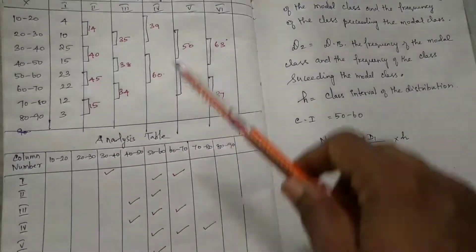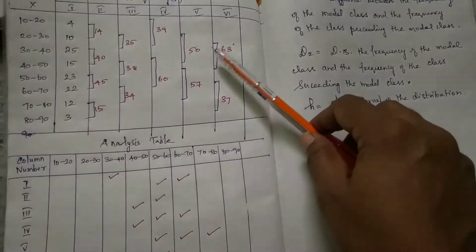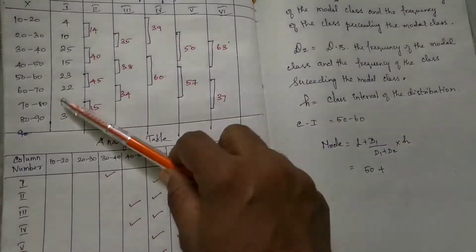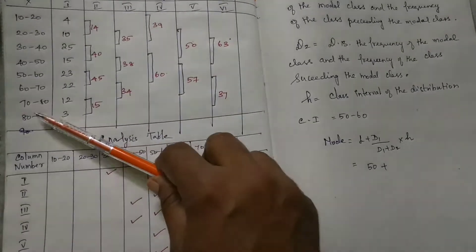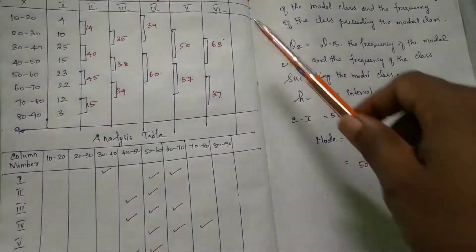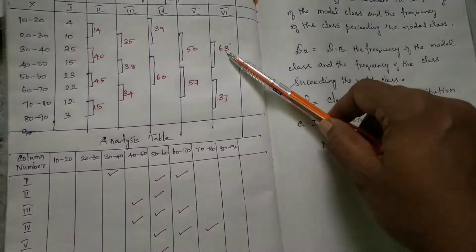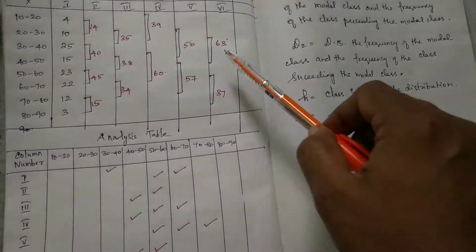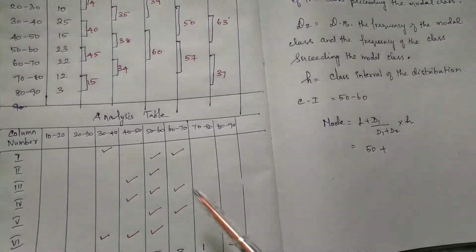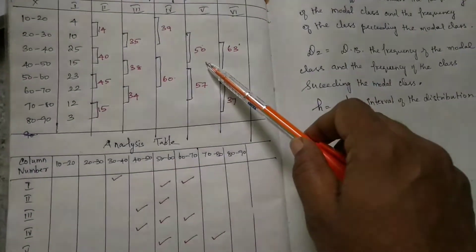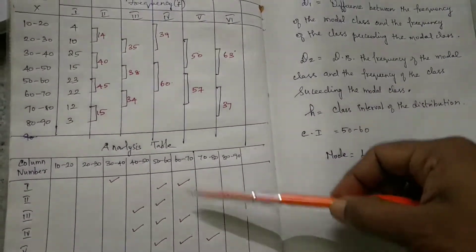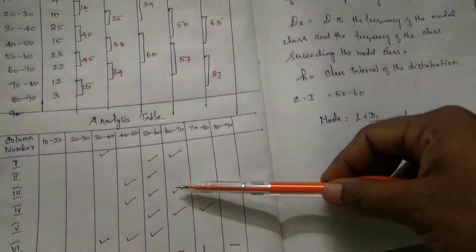Next, column 5. Column 5 is 57: 50 to 60, 60 to 70, 70 to 80. Tick these. Next, sixth column. Sixth column is 63. Tick these. This is analysis table, this is grouping table. The analysis table is now complete.